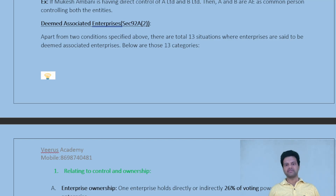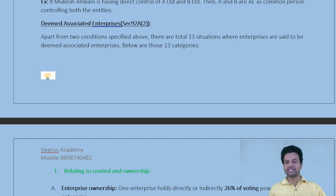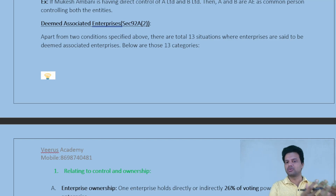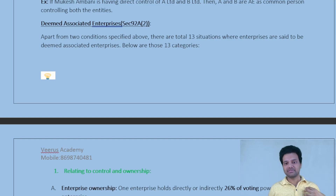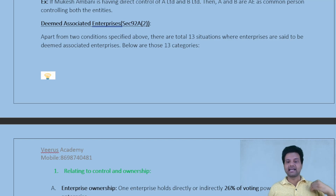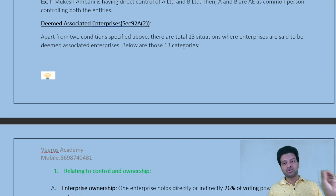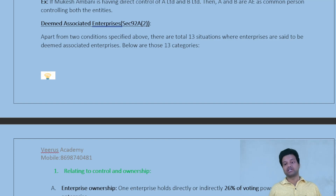For example, if my friend's company is 100% dependent on the raw materials I provide, and I am the only provider while he is the only purchaser, then our companies are associated enterprises. Similarly, if I advance a loan contributing to more than 51% of the total assets of his company, we can both be said to be associated enterprises.